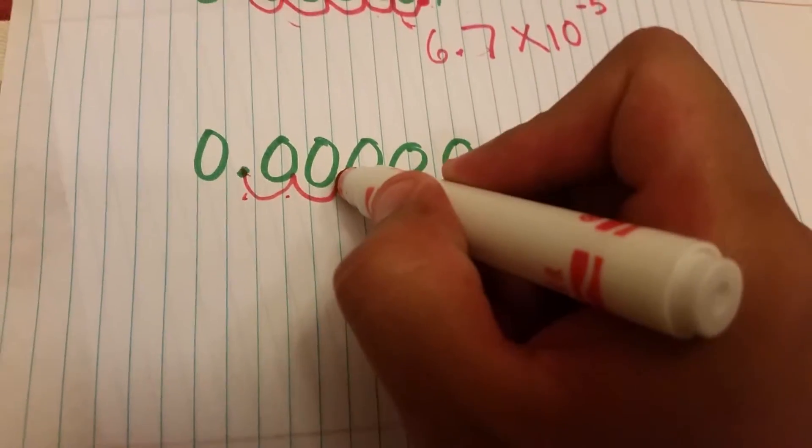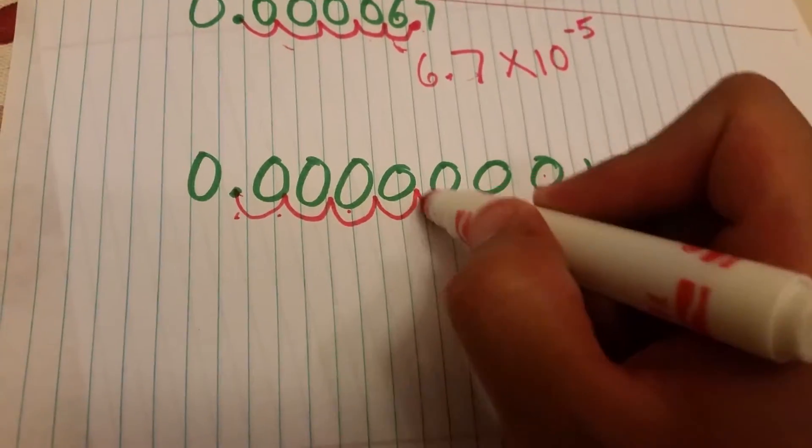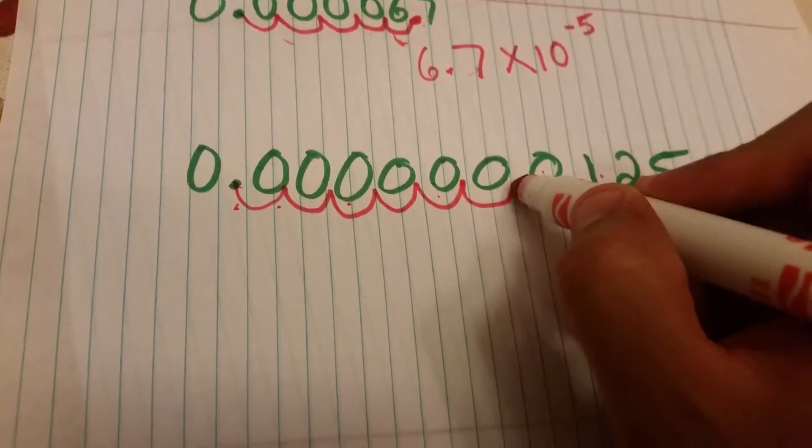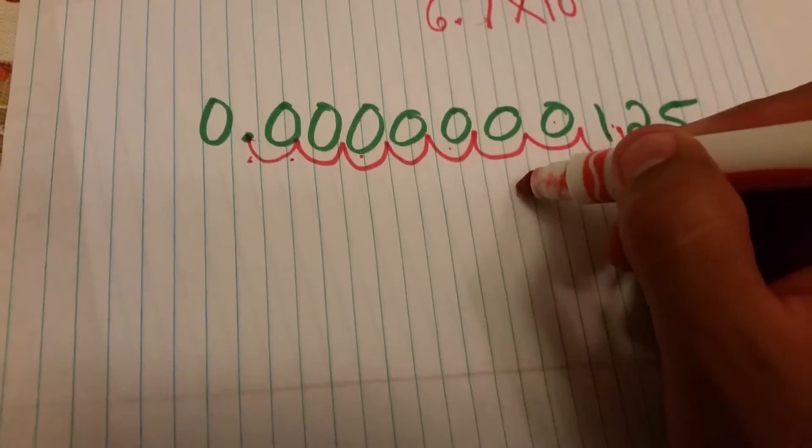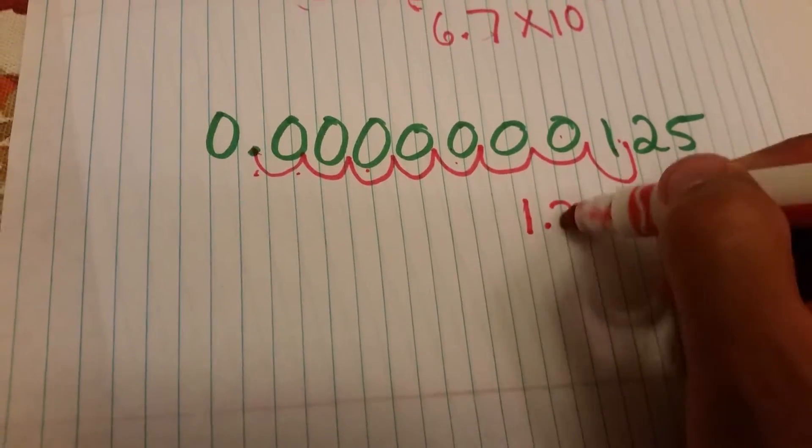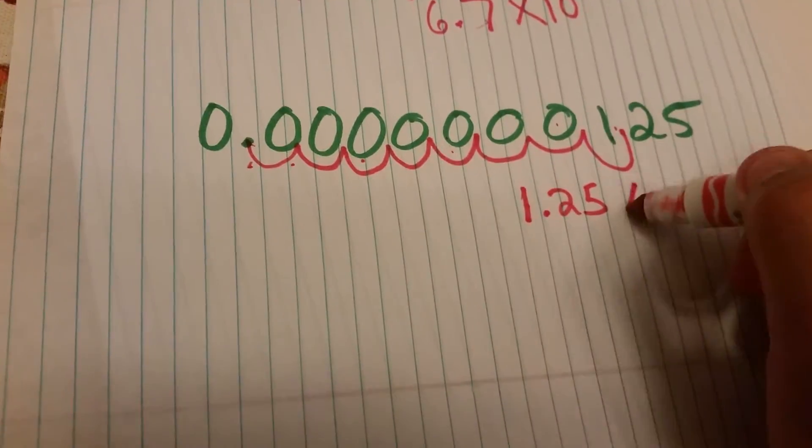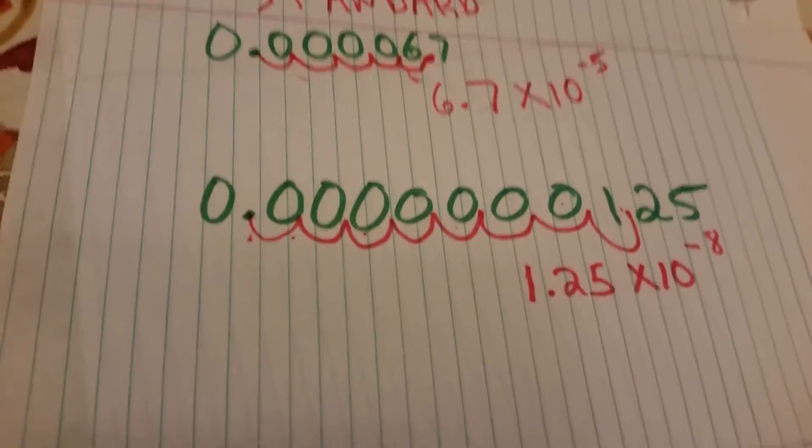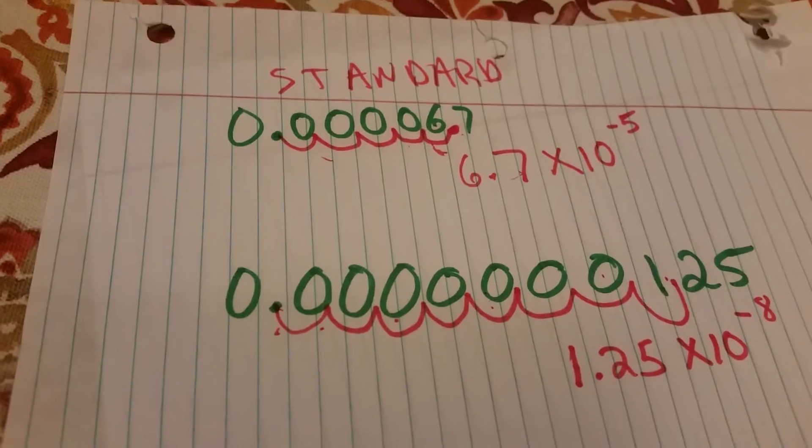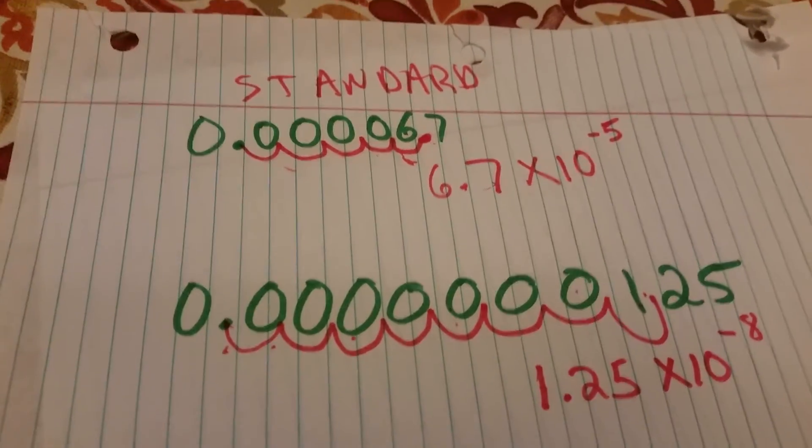So you're going to go one, two, three, four, five, six, seven, eight. So this number in scientific notation is going to be 1.25 times 10 to the negative eight power. If you still have questions after this, just let me know and I'll cover them.